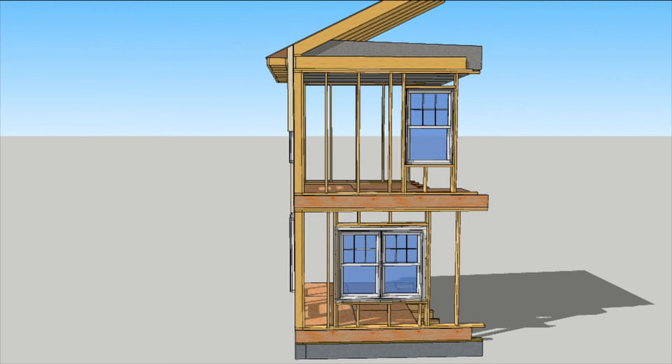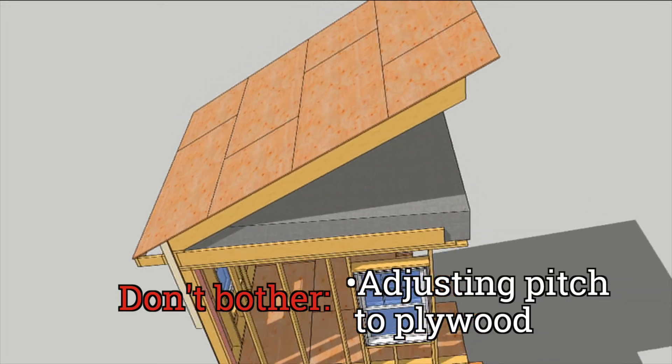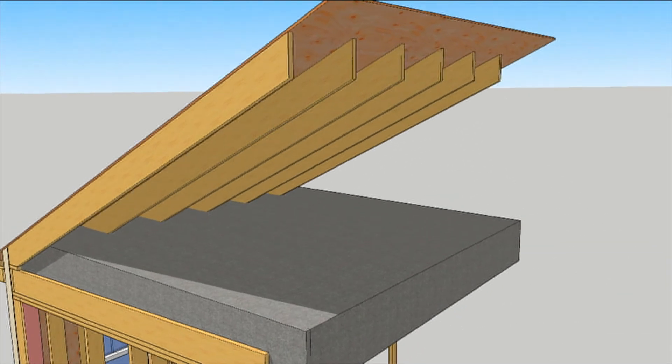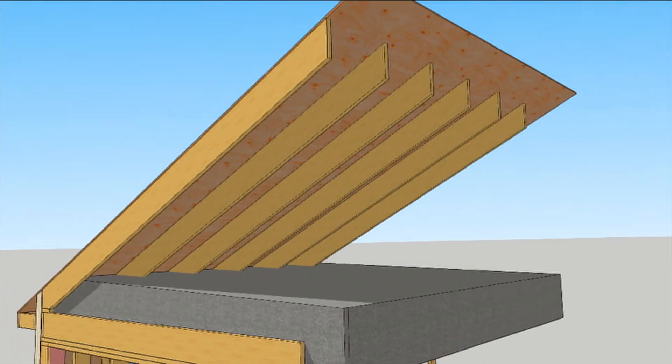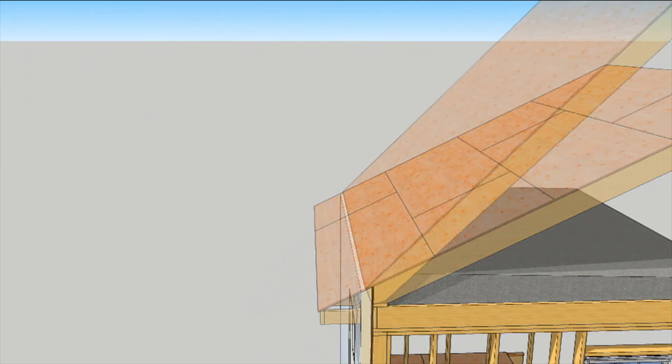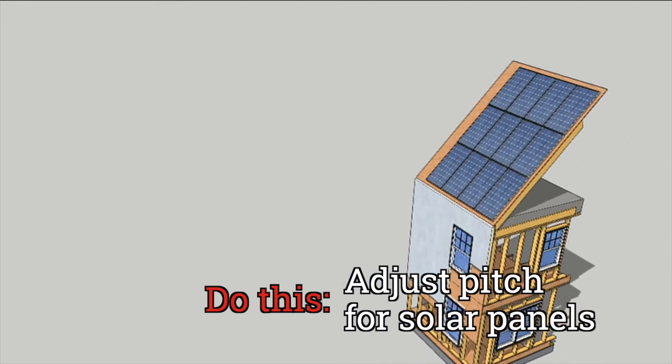Don't bother adjusting the roof pitch so that full sheets of plywood will work. Roof sheathing is cheap. Also, there are a lot of ways to frame a roof, so chances are the framers' cuts won't match your calculations. Instead, match the pitch of the roof to the best angle for solar panels and cover the roof with them.